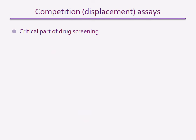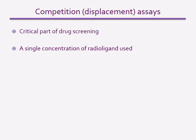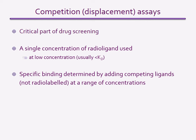Radio ligand binding assays can also be used to assess the binding of a ligand that does not contain a radio label. These assays are known as displacement assays, as they measure the ability of a compound to displace a radio label from the target, and this method is much more commonly used now than saturation assays. The cell or tissue incubations contain a single concentration of radio-labeled ligand, usually at a concentration below the dissociation constant, making it easier to displace. Different non-radioactive ligands are then added at a range of concentrations, and the amount of radioactive ligand they displace from the tissues or cells is measured, allowing the potency of the displacing ligands to be determined.